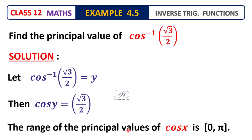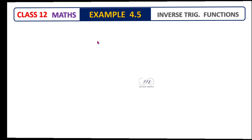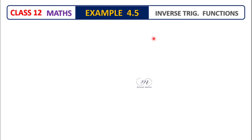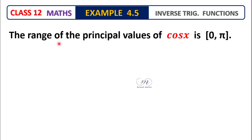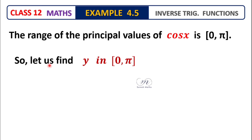The range of the principal value of cos x lies in the interval 0 to pi. So the range of cos x is 0 to pi. We will select y value in the interval 0 to pi.